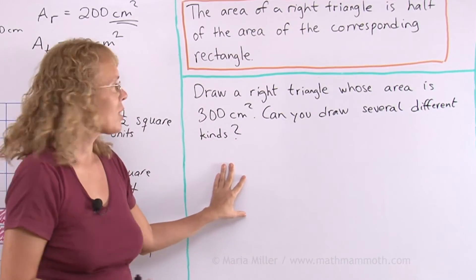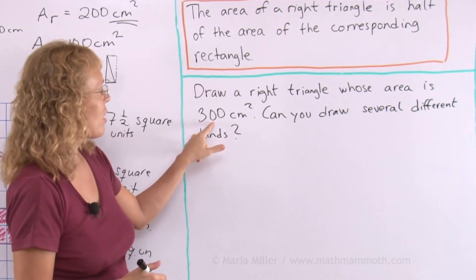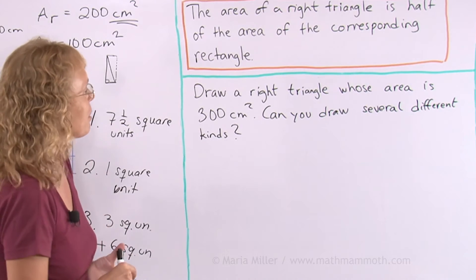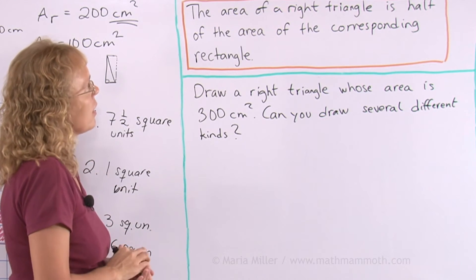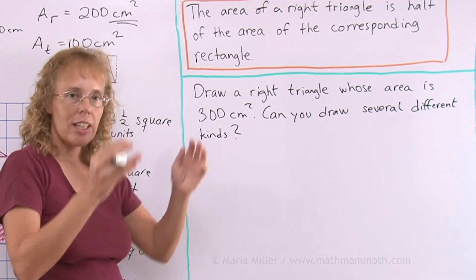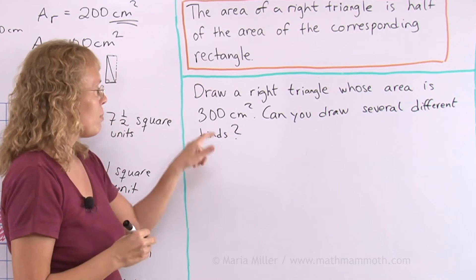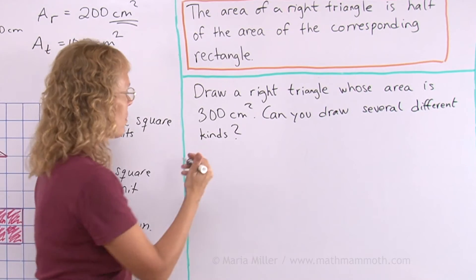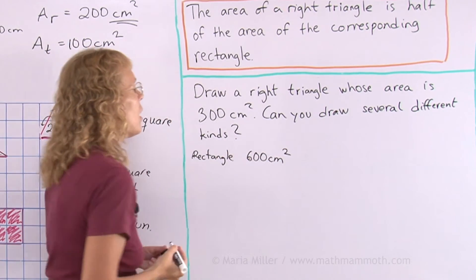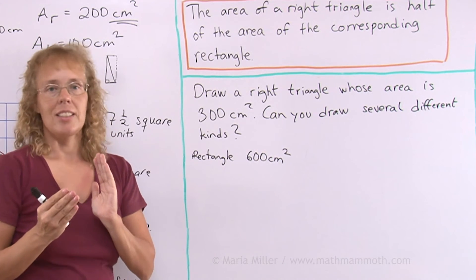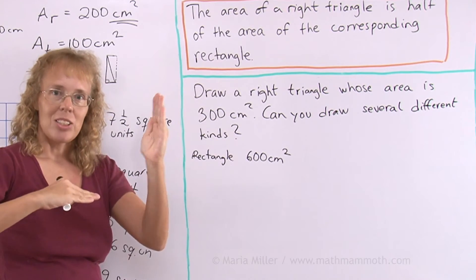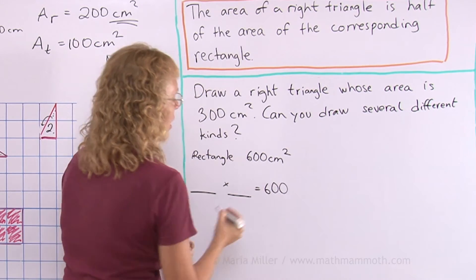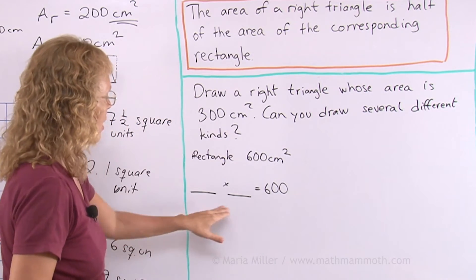Plus over here we have six square units, so in total nine square units. Lastly, we're going to draw a right triangle whose area is 300 square centimeters. I'm using this big number because I have so much space on the board — if you're doing this on paper, choose a much smaller number, maybe 30 or 60 square centimeters. The rectangle must be 600 square centimeters, since the triangle is half. So side times side has to equal 600.